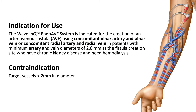Indication for Use: The Wavelink Endo-AVF system is indicated for the creation of an arteriovenous fistula using concomitant ulnar artery and ulnar vein, or concomitant radial artery and radial vein, in patients with a minimum artery and vein diameter of 2.0 mm at the fistula creation site who have chronic kidney disease and need hemodialysis. Contraindication: target vessels less than 2 mm in diameter.